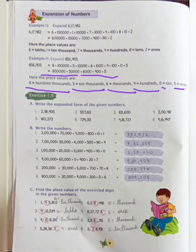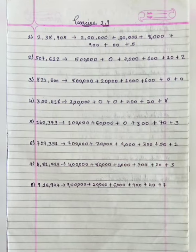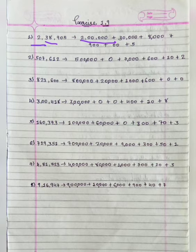Now exercise 1.9. Write the expanded form of the given numbers. The first number is 2,38,905. We will write it as: 2,00,000 plus 30,000 plus 8,000 plus 900 plus 0 plus 5.